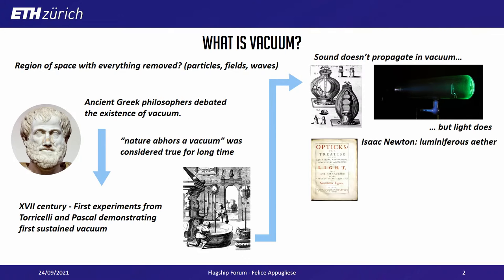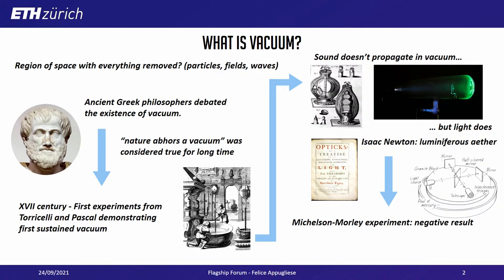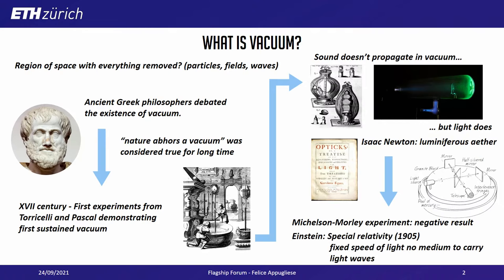But on the other hand, light does. And this brought many people, including Newton, to believe in the existence of a medium which, even though it was invisible, could not be removed and was carrying light. This was considered true until the most famous negative experiment in history: the Michelson-Morley interferometer, which showed that ether doesn't exist. Only with Einstein's special relativity did people realize that light has a fixed speed and doesn't need a medium.